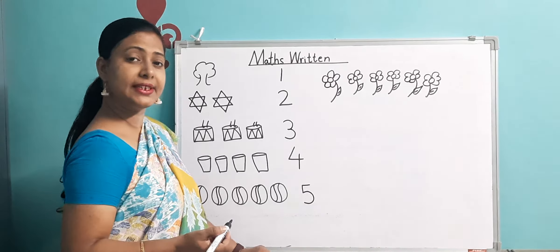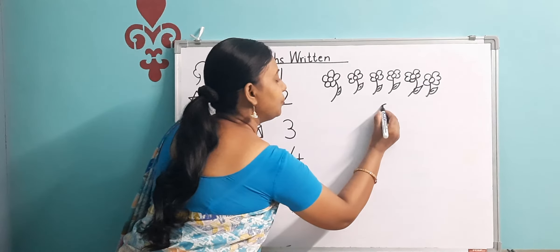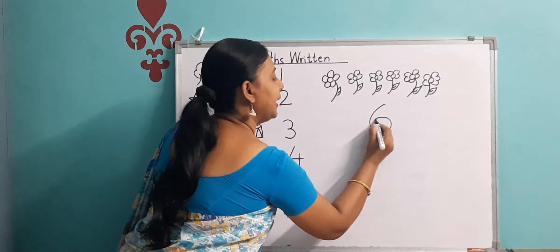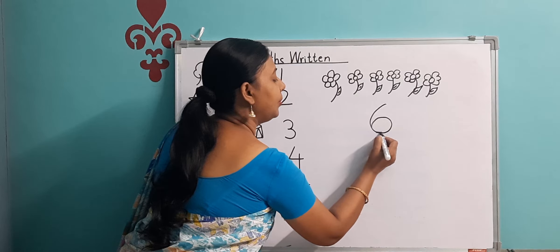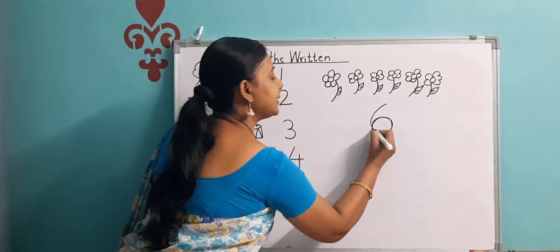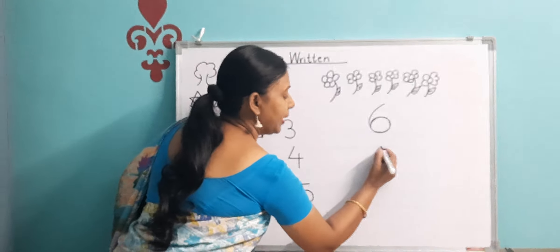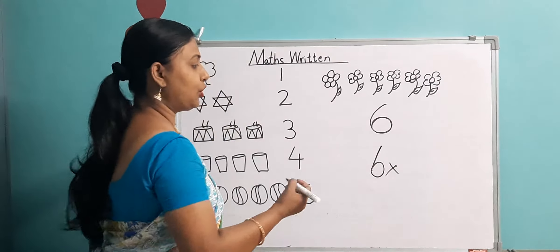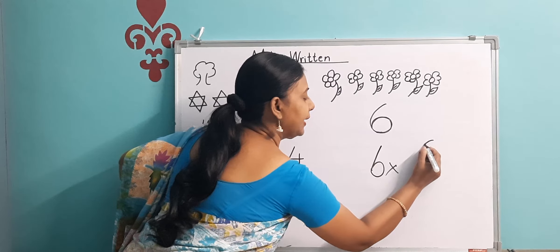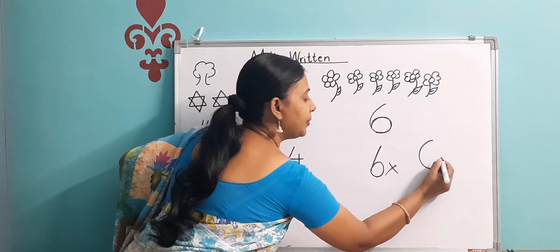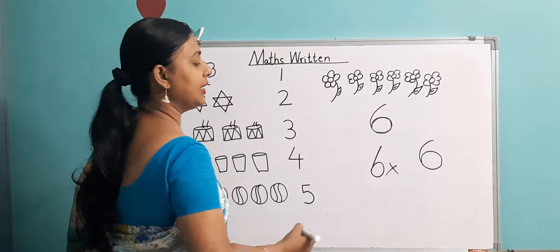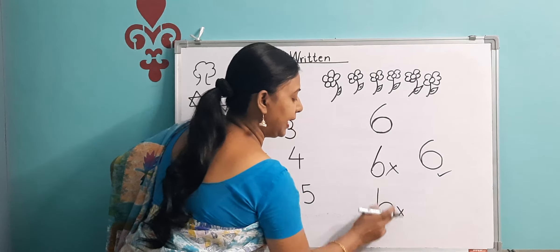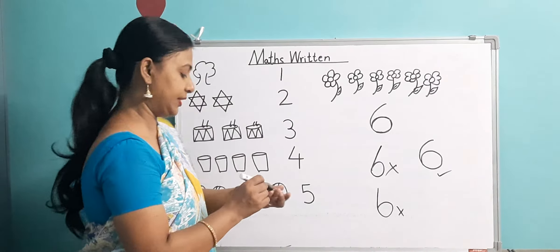So now, how do we write number six? We are going to learn to write number six. What you have to do is draw a slant like this, like a C, and then you are going to take it up and make a circle like this — it becomes number six. Watch: you draw a little curve like a C, take it up, and make a circle. This is right. You are not going to write like this — a standing line and then a circle — this is wrong. This is the correct way of writing number six.